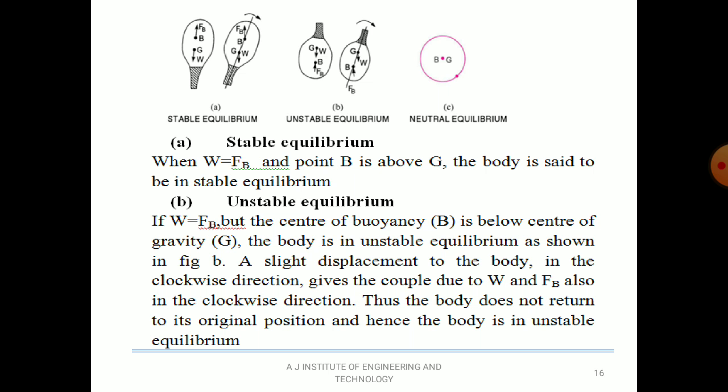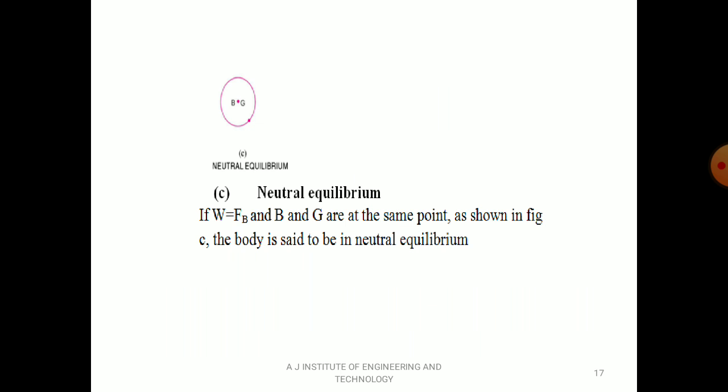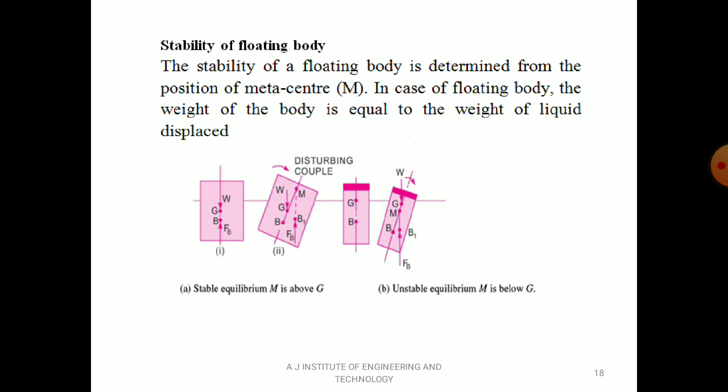For neutral equilibrium — the center of gravity and center of buoyancy coincide. If W = FB and B and G are at the same point, the body is said to be in neutral equilibrium.